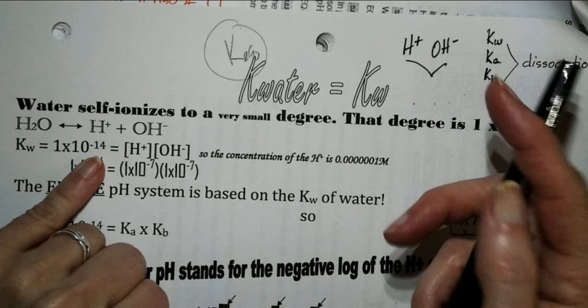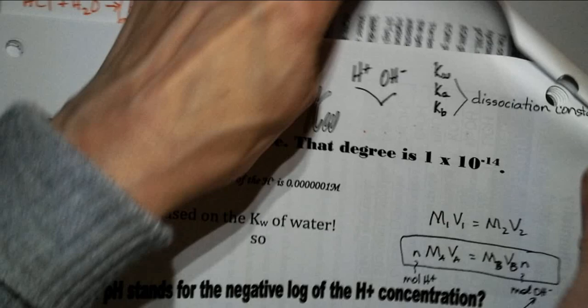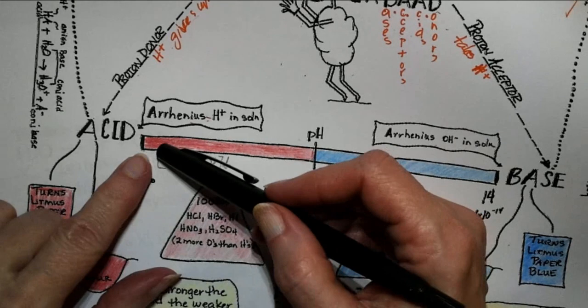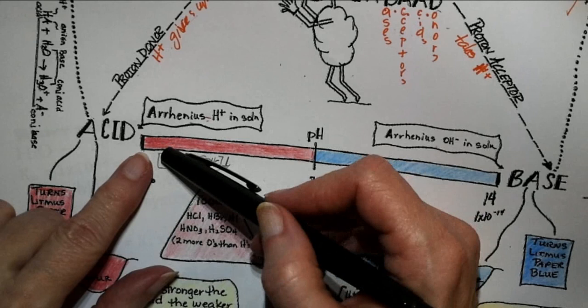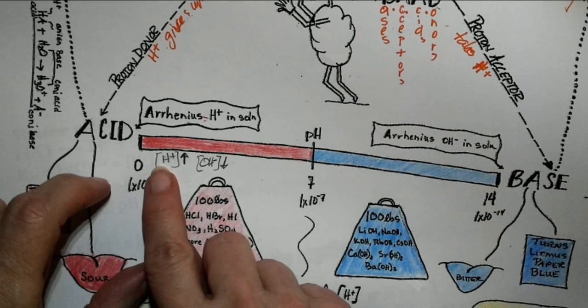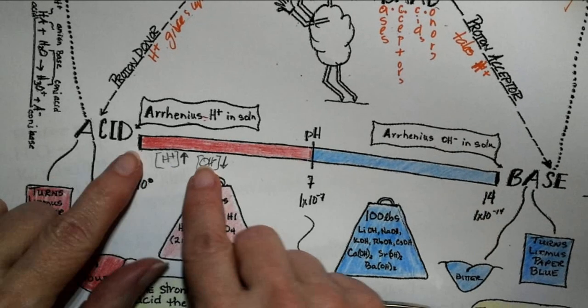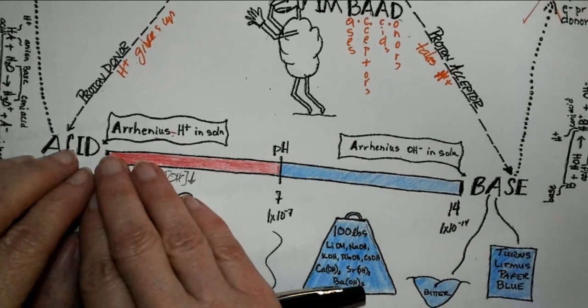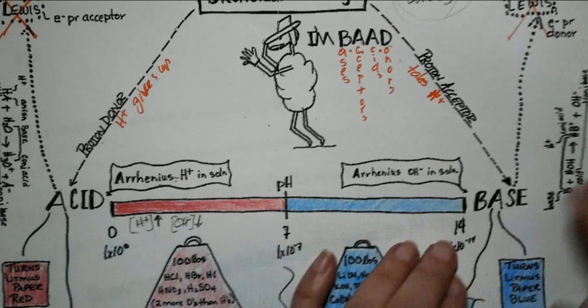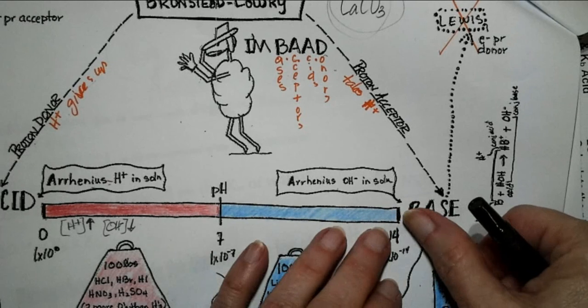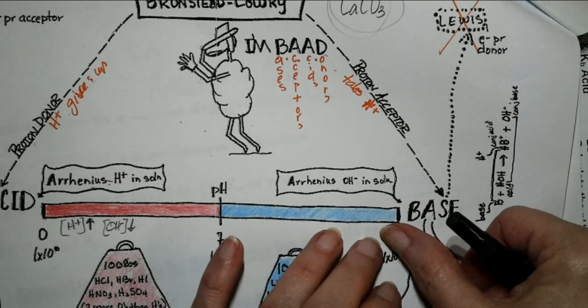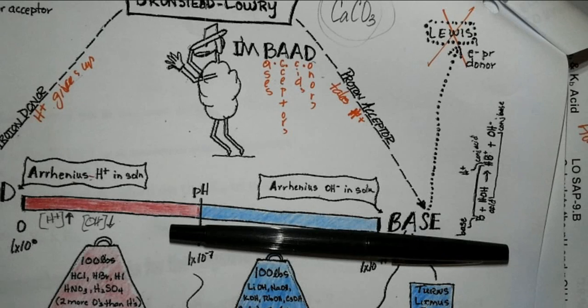If you go down on the acid end of the scale, you have lots of hydrogen ions and very few hydroxide ions. The concentration of hydrogen ions increases and the hydroxide ion concentration decreases as you go down that end. On the opposite end, the concentration of hydroxide ions is huge and the concentration of hydrogen ions is low. When you multiply the hydrogen ion concentration and the hydroxide ion concentration together, it will always equal 1×10⁻¹⁴.